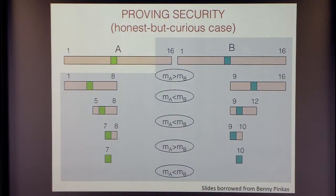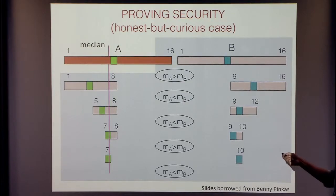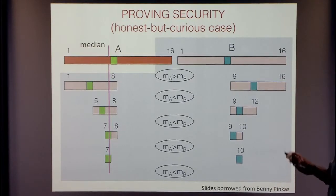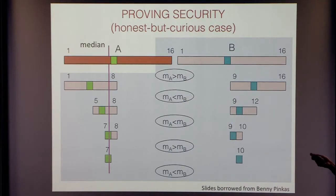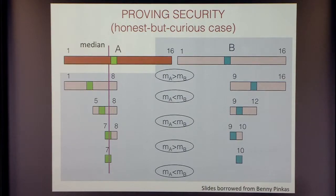Consider simulating Alice. The simulator has the set of inputs and also has the median. Simulation essentially boils down to finding out what the result of the comparison is in each iteration. The beautiful part is: if I know what the final median is, and I just set Bob's value to be this median and repeat this computation, I would precisely get the same outputs for each of these secure comparisons. So in some sense, it does not leak any information at all — you can recreate the entire transcript just with the input and the median. This is the semi-honest case.